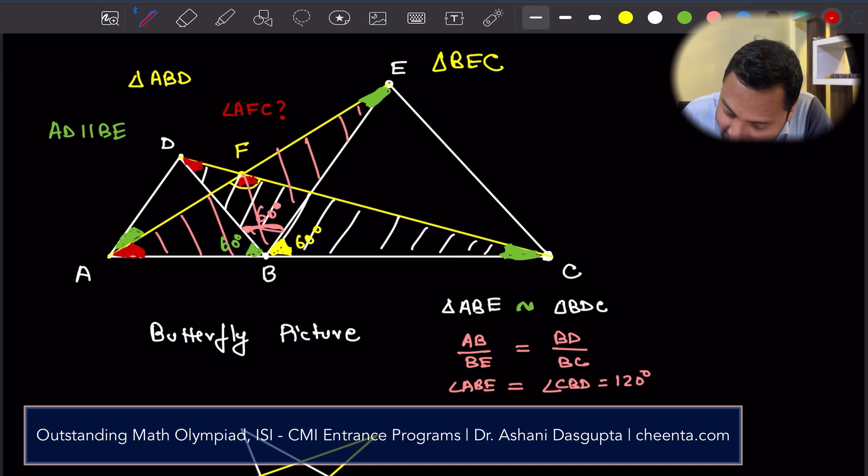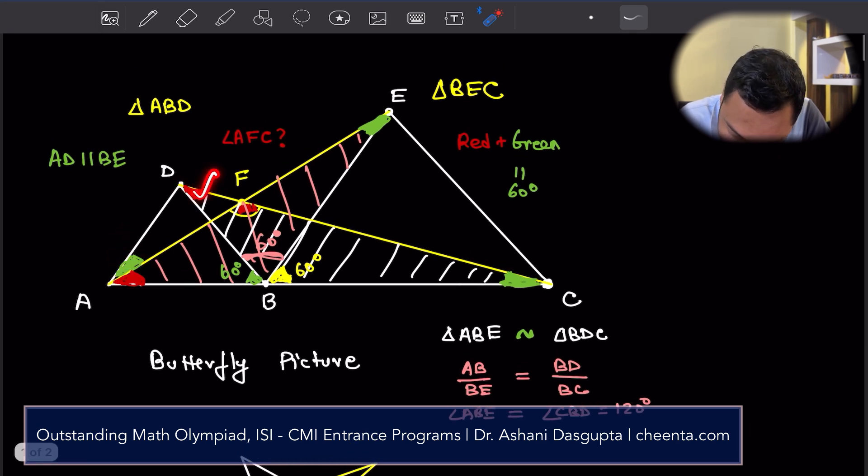So red plus green is 60 degrees. Now if red plus green is 60, then red plus green is also 60. So this red and this green is 60. This is 60. So this remaining angle in the triangle must be 60. So the remaining angle here must be 60 degrees.